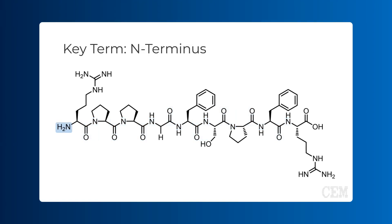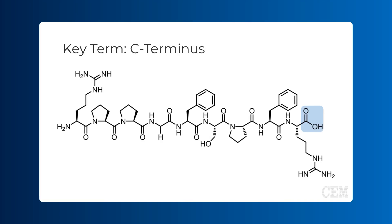The N-terminus of a peptide is the end of the amino acid chain that has a free amino group (NH2). It is typically written on the left side of a peptide sequence. The C-terminus of a peptide is the end of the amino acid chain that has a free carboxyl group. It is typically written on the right side of a peptide sequence.